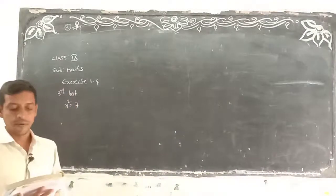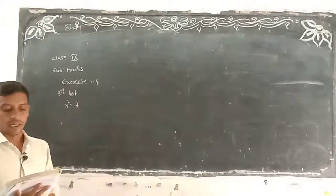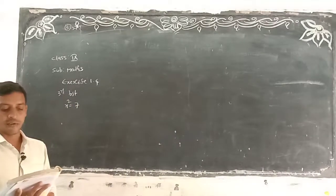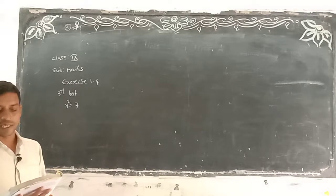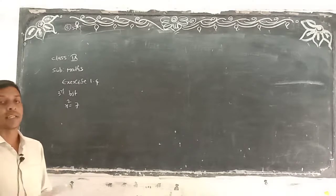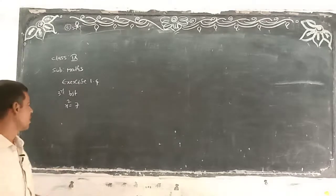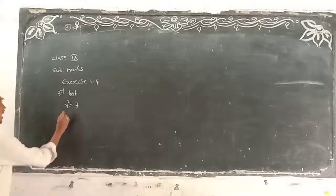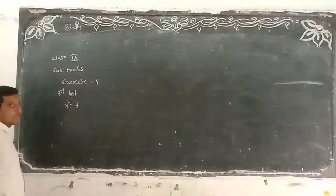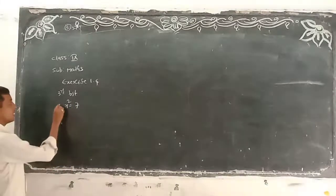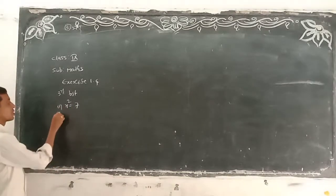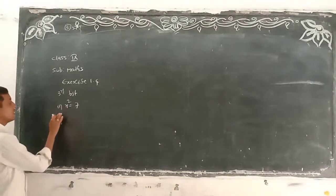In the following equation, find whether the variables x, y, z, etc. represent rational or irrational numbers. So, x squared is equal to 7. Look here carefully — x squared is equal to 7.